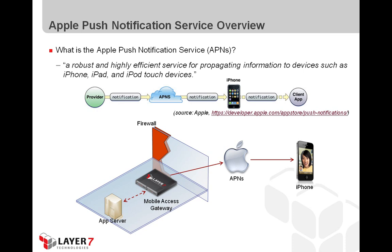The feedback service is used to track active and inactive devices. For example, notifications can't be sent to a device where the application has been uninstalled, so this service would notify the provider that certain device tokens should no longer be used. We're also using the Layer 7 gateway to maintain the certificates and keys required to establish a trusted connection between the gateway and the APNS.